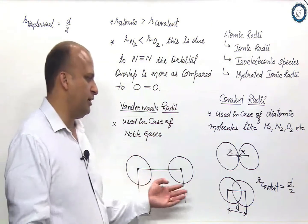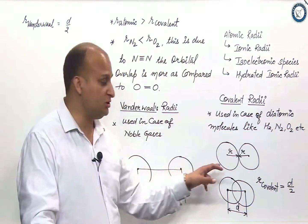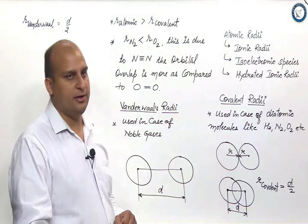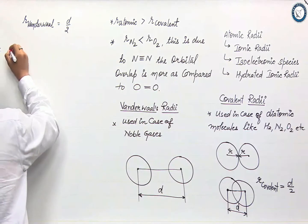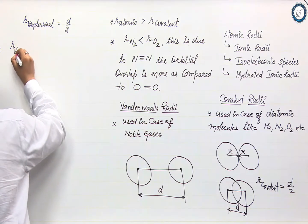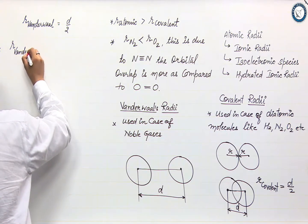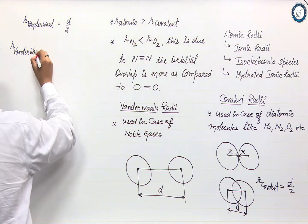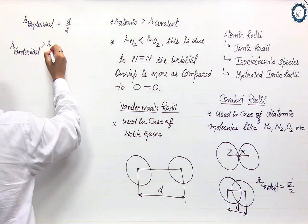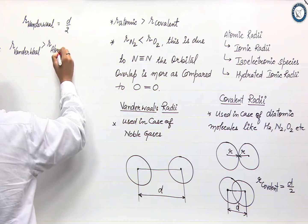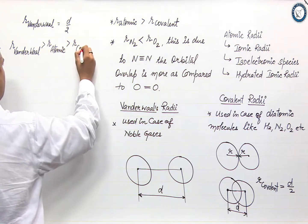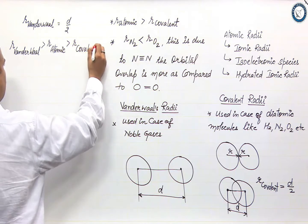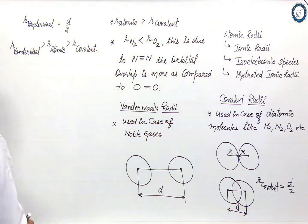As it is very clear over here that this Van der Waals radii is much, much larger than the atomic radii. So the order should be d, this is the order.